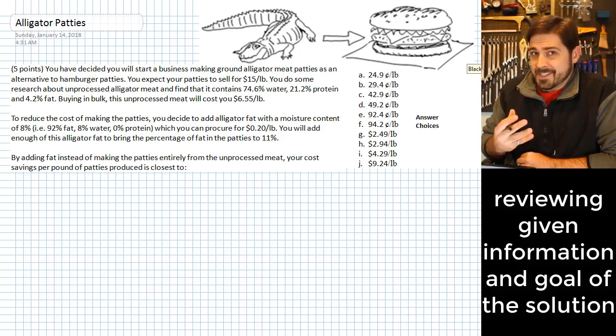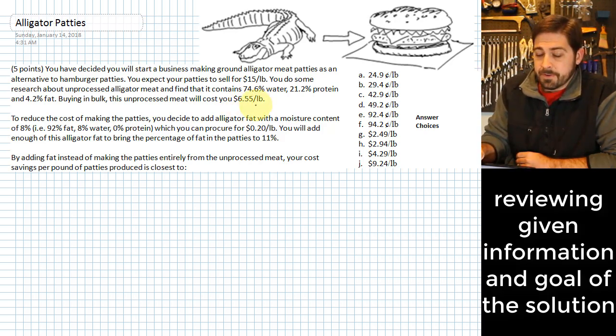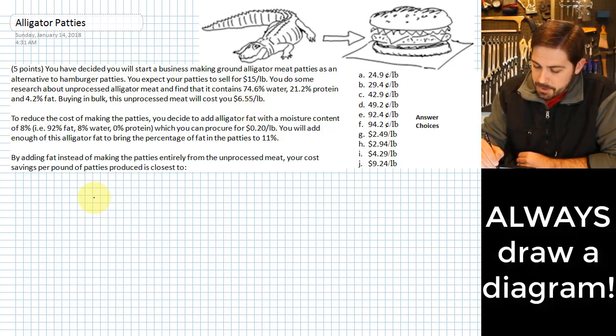To figure out that savings, we basically need to look at one pound and look at the cost difference by making it this way versus the $6.55 that it would cost you to make it the way that it would just naturally without mixing the fat in. Okay, so we're going to do a little diagram here. We always do these diagrams.